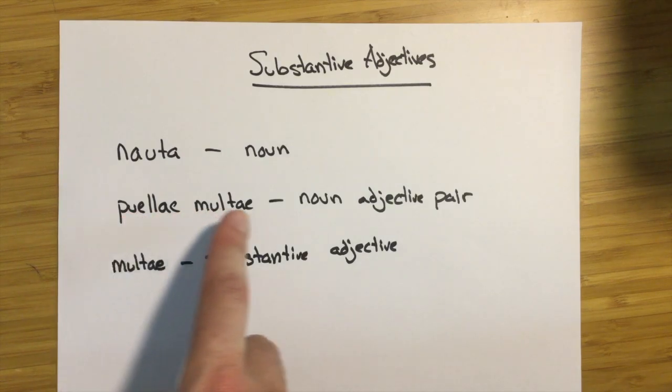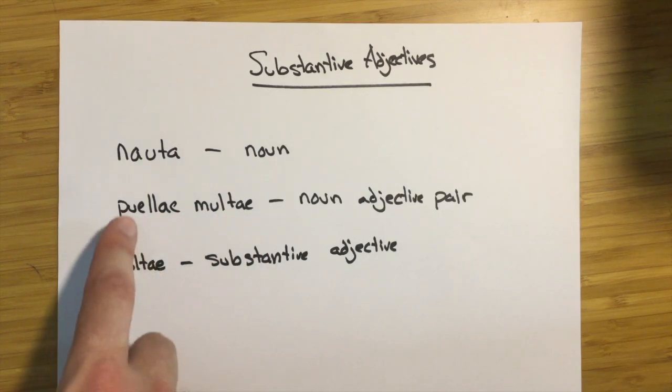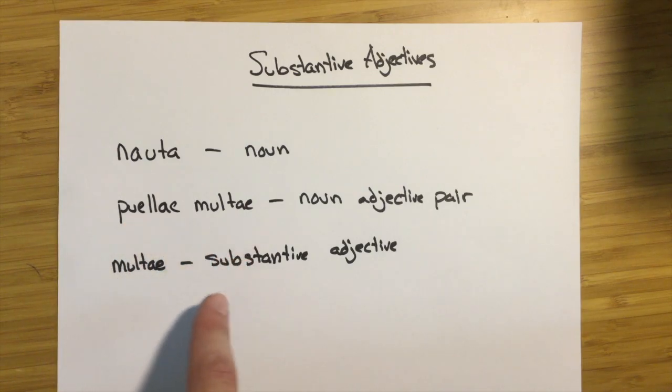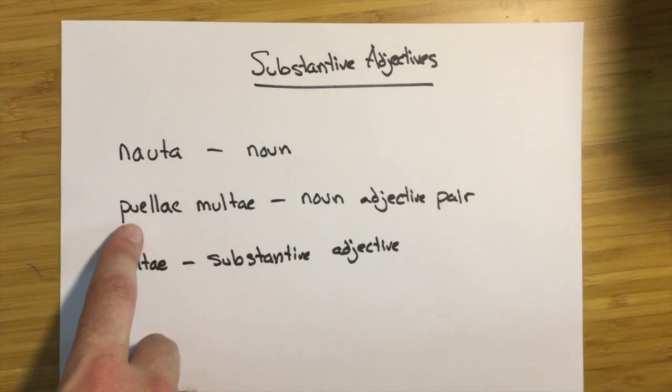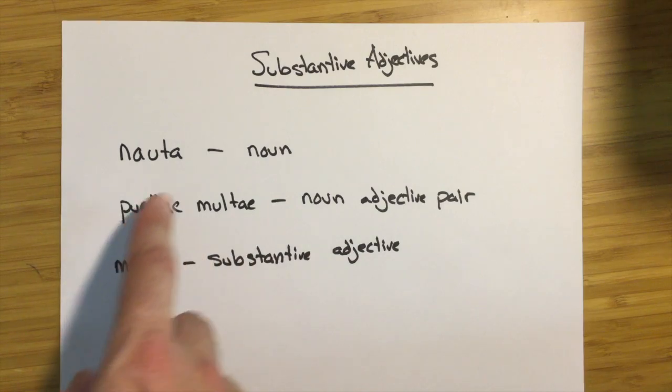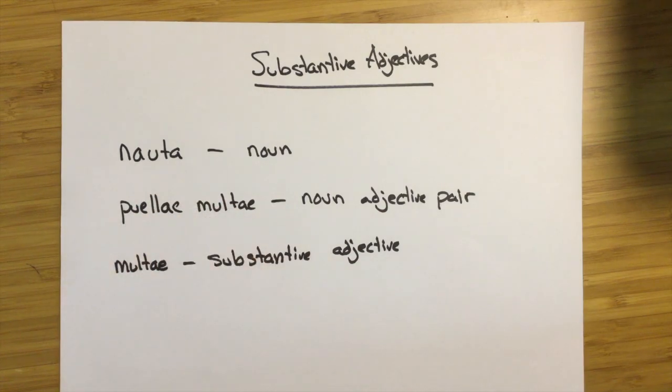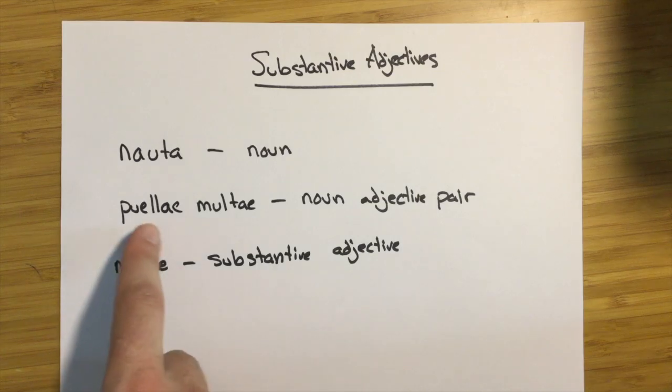Here we have a noun adjective pair: puellae multae, which means multiple girls. We have our noun and our adjective. This could be translated as a subject, or we could put it in a different case and it could be an object, but it would always mean multiple girls.